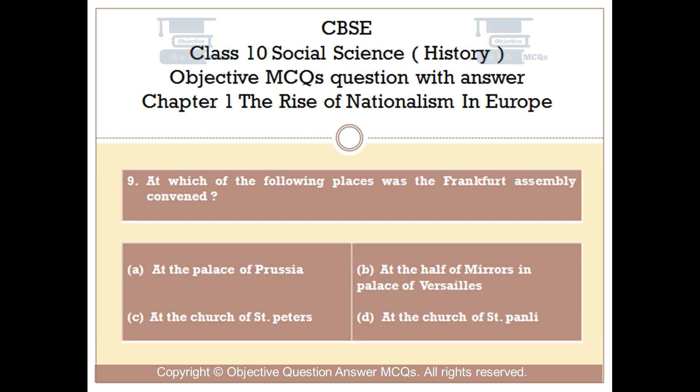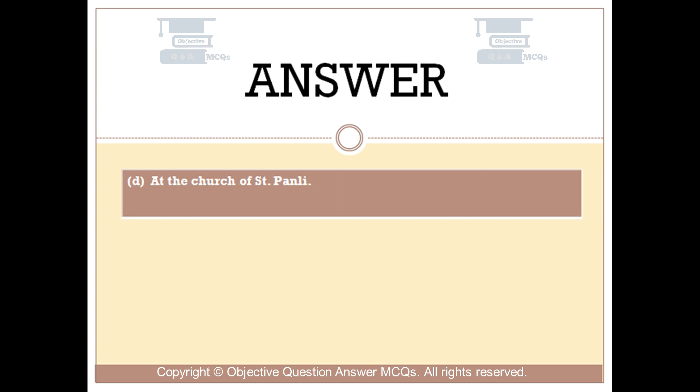Question number 9. At which of the following places was the Frankfurt Assembly convened? Option A: at the Palace of Prussia. Option B: at the Hall of Mirrors in the Palace of Versailles. Option C: at the Church of St. Peter's. Option D: at the Church of St. Paul's. The right answer is Option D — at the Church of St. Paul's.